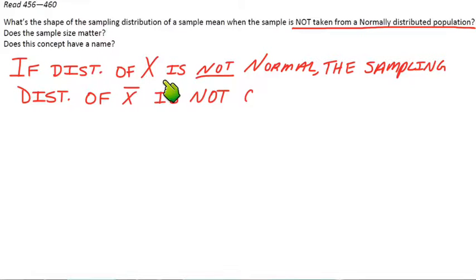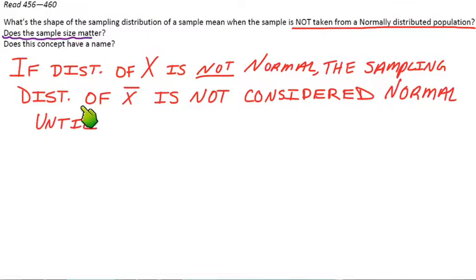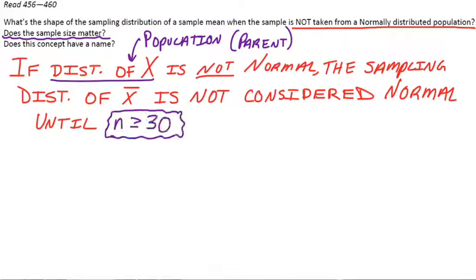But if the parent population is not normal, the sampling distribution of X-bar is not considered normal until there's a certain criteria about the sample size. So now we know that that sample size would have to be greater than or equal to 30. That's the key here for the Central Limit Theorem.